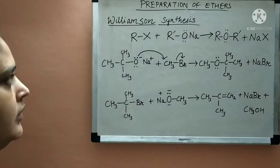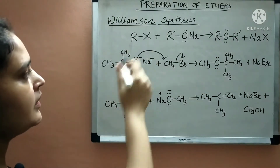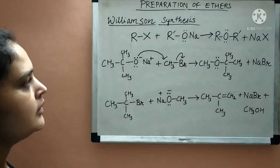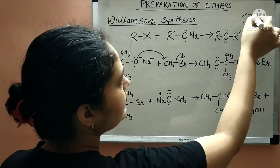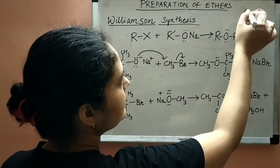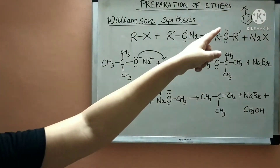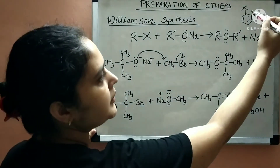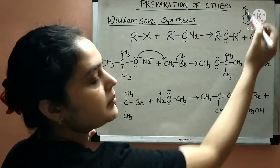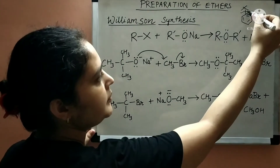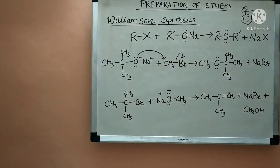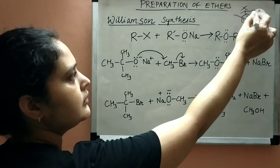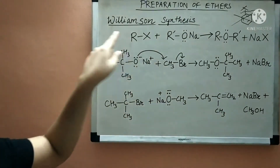One more important point: haloarenes like bromobenzene or chlorobenzene cannot undergo Williamson synthesis. This is because the carbon-halide bond in haloarenes has double bond character due to resonance, so it cannot be broken easily. Therefore, haloarenes cannot produce ether through Williamson synthesis.